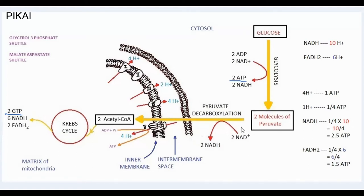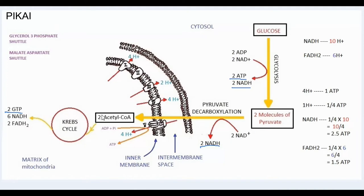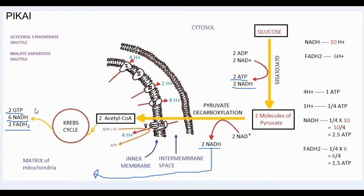Now let's look at the NADH and FADH2 produced in aerobic respiration. We obtain two NADH molecules from the glycolytic pathway, two NADH molecules from pyruvate decarboxylation where two molecules of pyruvate are converted to two molecules of acetyl-CoA. Then these two molecules of acetyl-CoA are used in the Krebs cycle to produce six NADH molecules and two FADH2 molecules. These two NADH molecules from the Krebs cycle are produced inside the matrix of the mitochondria.